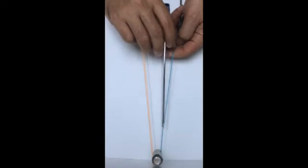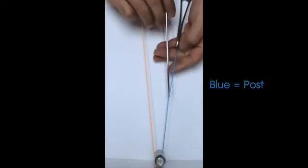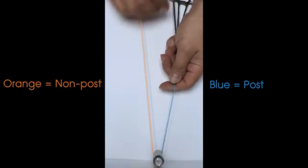For better understanding, the suture limbs have been color-coded as blue for post and orange for non-post or the loop limb.